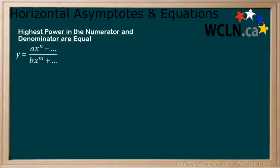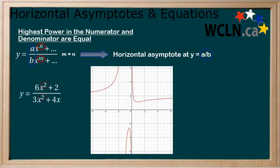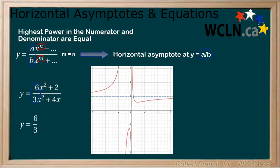The second case is when the highest powers in the numerator and denominator are the same. In these cases, there is a horizontal asymptote at the coefficients of these powers. In the following example, we can see that the highest powers in the numerator and denominator are the same. Therefore, the horizontal asymptote can be found at y equals six over three, or y equals two. Remember that a horizontal asymptote might be crossed by the function before it begins its end behaviour, as we can see occurring here.